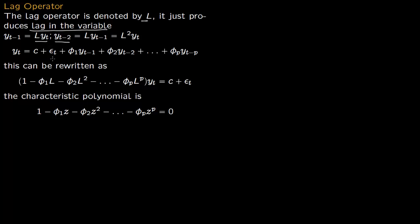This is your AR(p) process. You have φ₁·y(t-1), φ₂·y(t-2), all the way to φₚ·y(t-p). Rewriting this AR(p) process using the lag operator: instead of y(t-1) you write L·y(t), y(t-2) becomes L²·y(t), and so on, all the way to p lags of y(t).